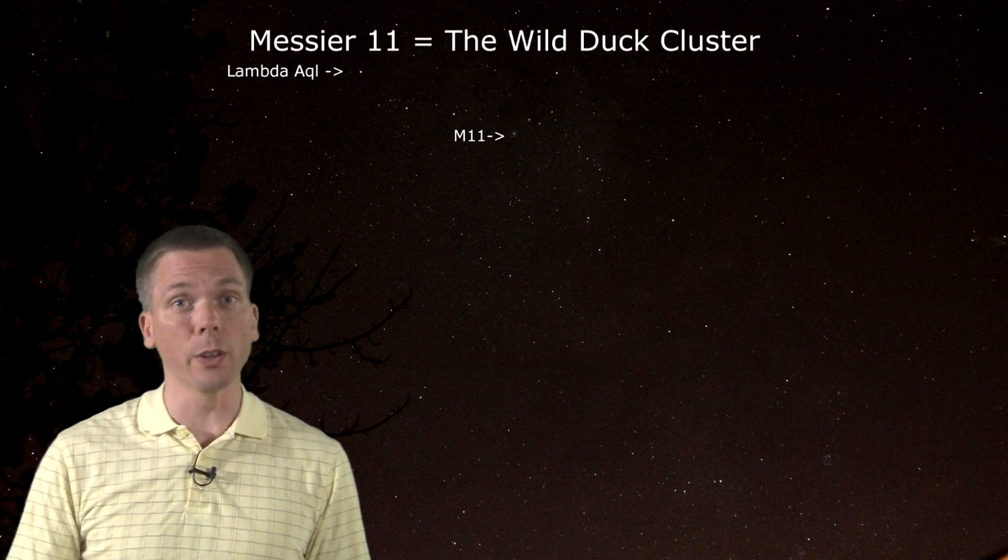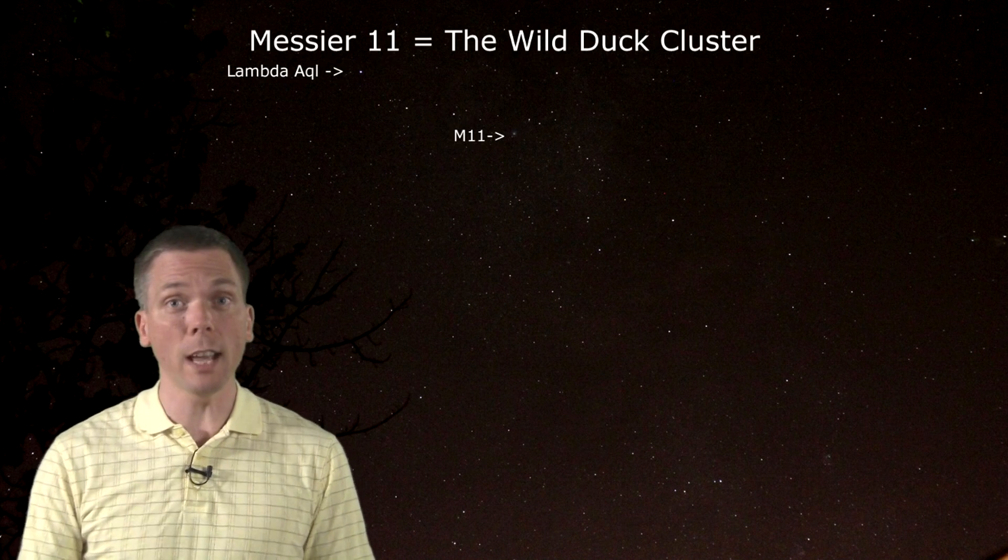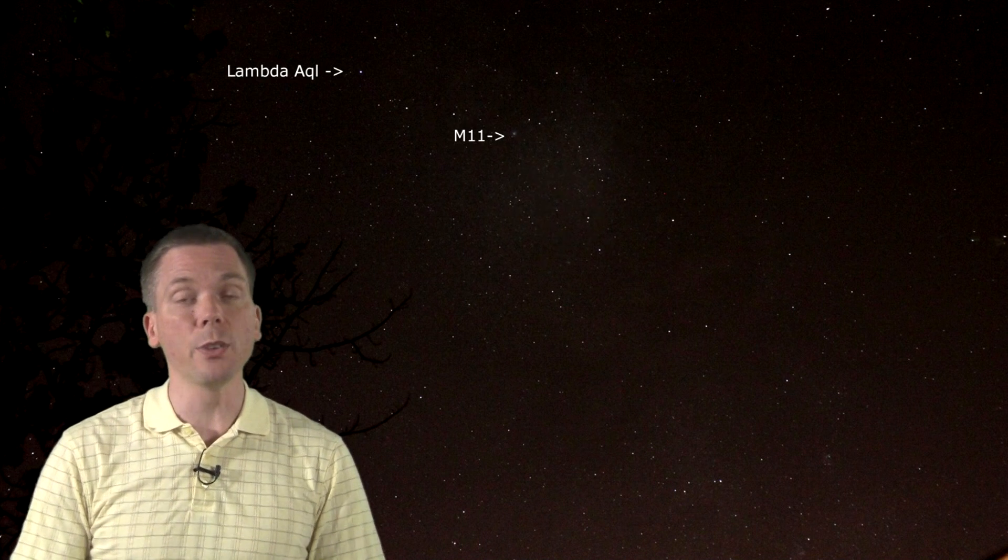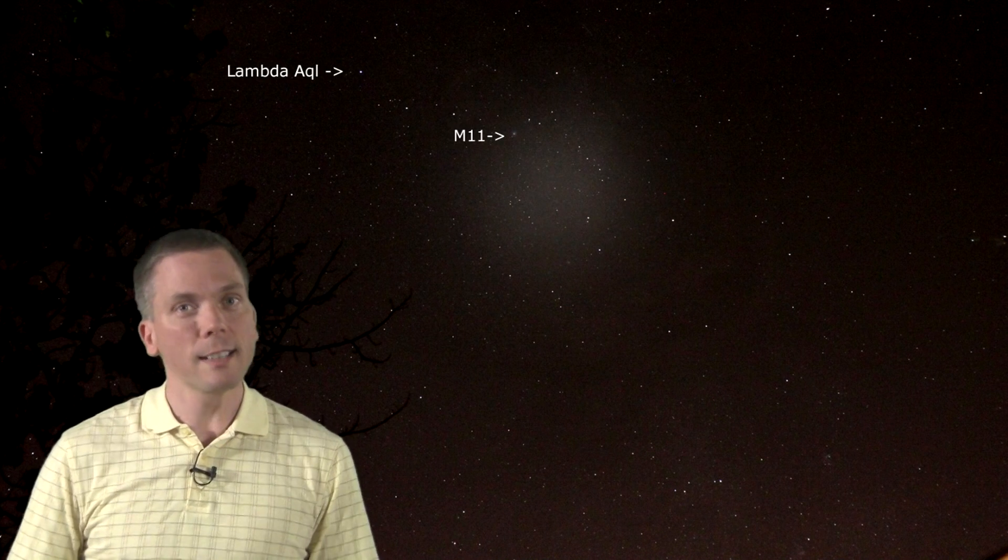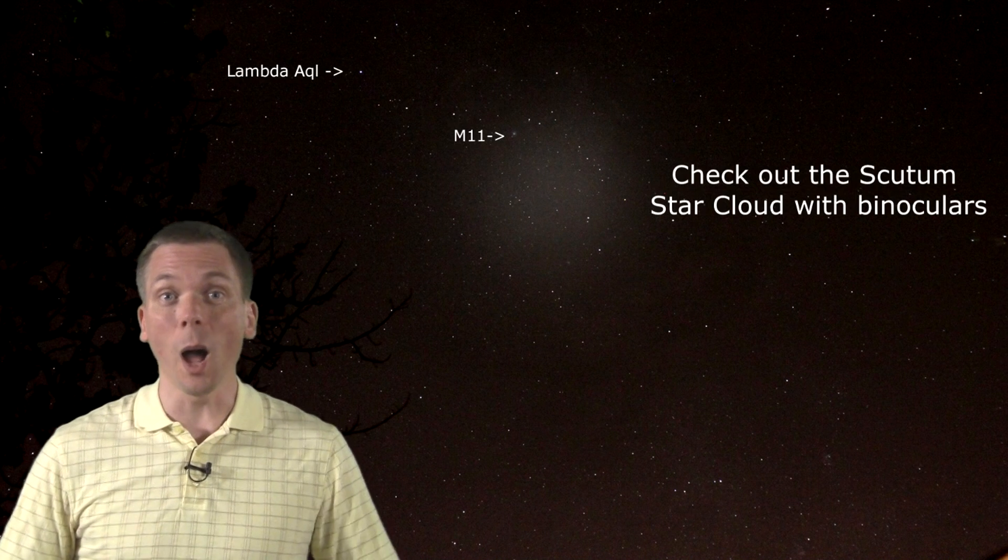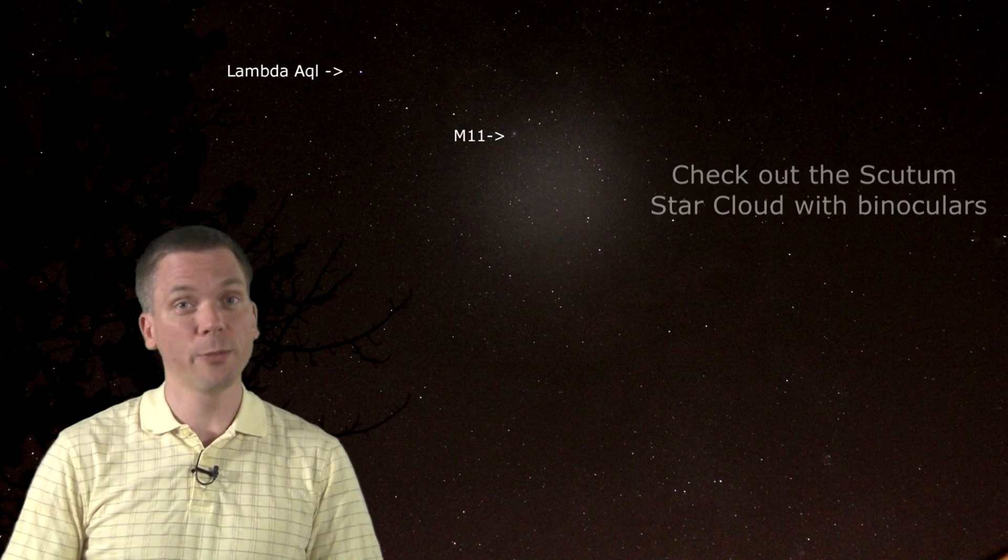If you do nothing more with binoculars and keep moving past there, you'll be looking into the Scutum star cloud, a section of the Milky Way less obstructed by dust, and under darker skies, a brighter region of our galaxy from our perspective.